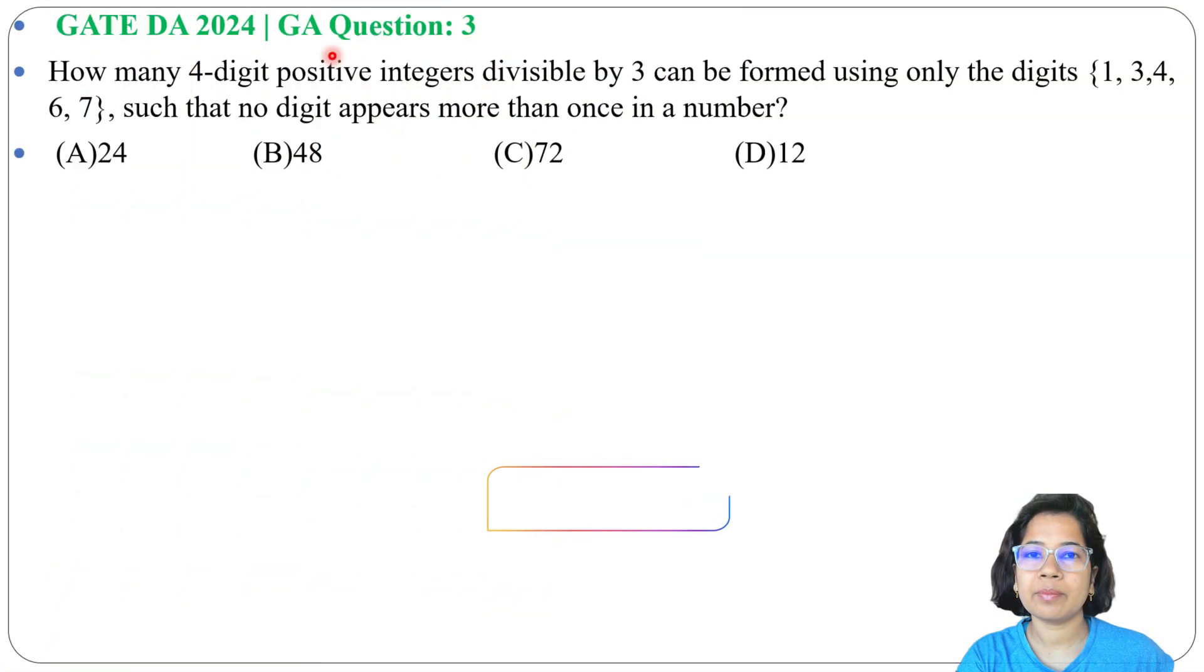Let's solve one previous question of general aptitude. This question was asked in GATE DA, question number 3. How many 4-digit positive integers divisible by 3 can be formed using only the digits 1, 3, 4, 6, 7, such that no digit appears more than once in a number? Four options are given. It is asking for 4-digit positive integers that are divisible by 3.